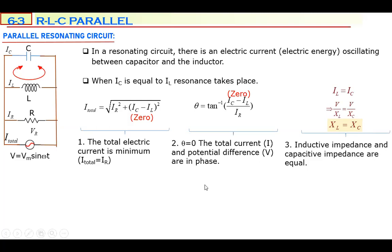This is a frequently asked ministry exam question: for resonance, one condition is that XL must be equal to XC. The inductive impedance of the coil must equal the capacitive impedance of the capacitor. XL equals XC — this is the third important property of parallel resonating circuits.